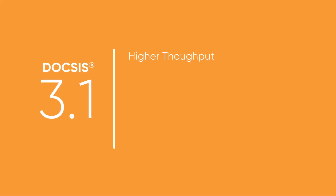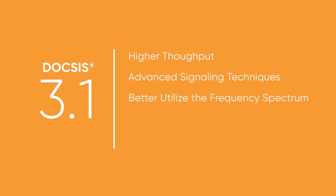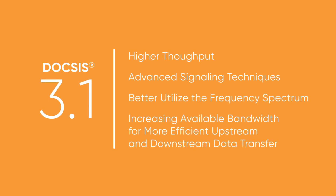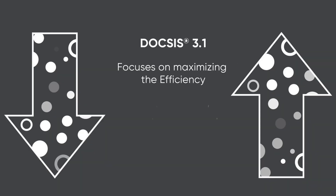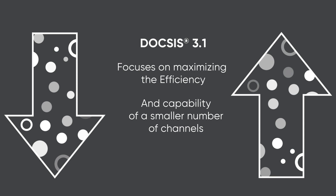DOCSIS 3.1 achieves higher throughput by using advanced signal processing techniques to better utilize the frequency spectrum and by increasing the available bandwidth for more efficient upstream and downstream data transfer. DOCSIS 3.0 increases the number of channels, but DOCSIS 3.1 focuses on maximizing the efficiency and capability of a smaller number of channels.